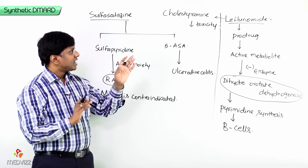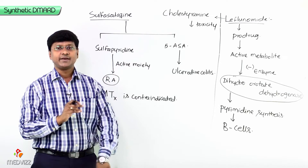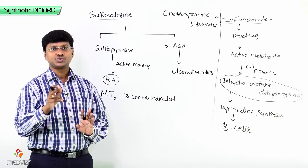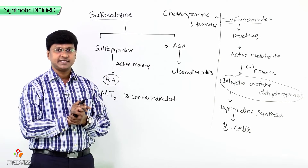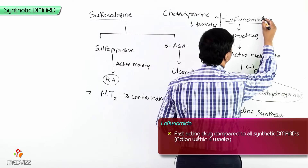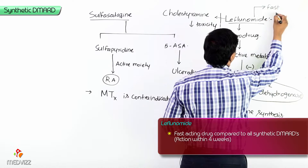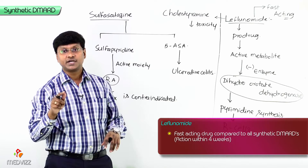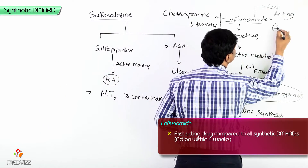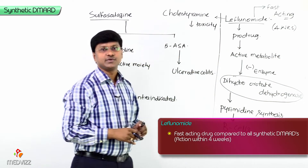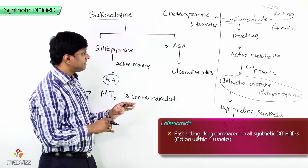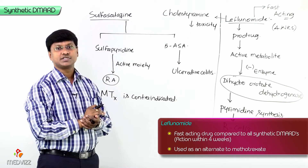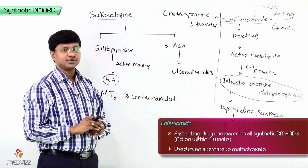Comparing all synthetic DMARDs, their action typically takes around six weeks to six months to start. Among all synthetic DMARDs, leflunomide is the fastest-acting — its action manifests within four weeks. It can also be used as an alternative to methotrexate.